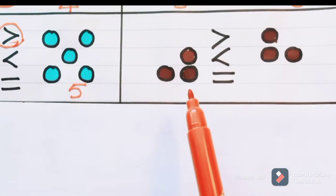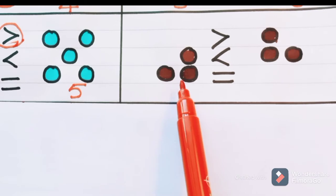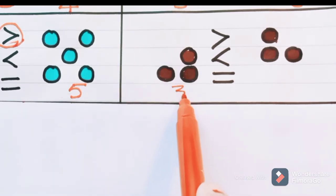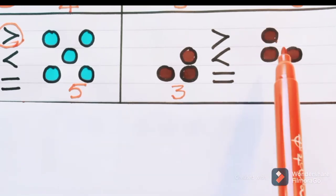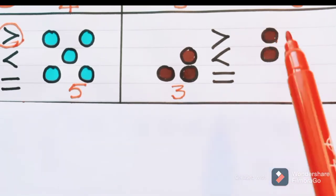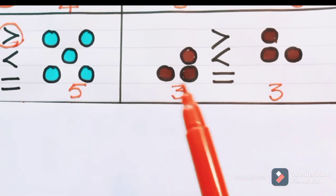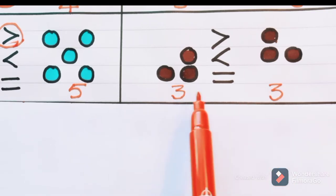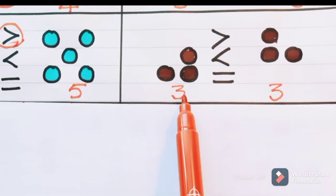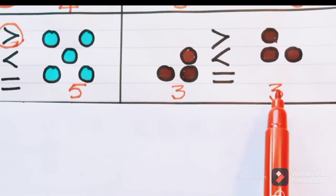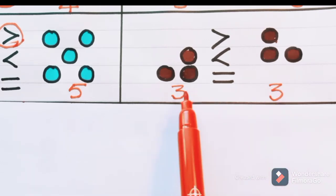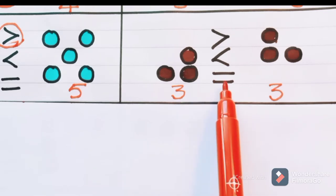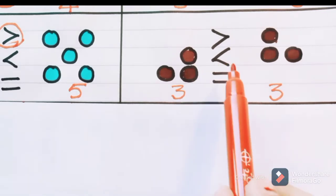Now look at here. How many circles are there? One, two, three — there are three circles. Here also one, two, three — here also we have three circles. So are these same numbers or different numbers? Both are same numbers only. Three is same as three. So for same numbers, which symbol do we have to use? It is equal to symbol. Now let us circle equal to symbol.